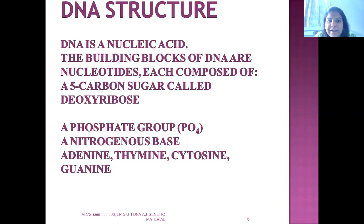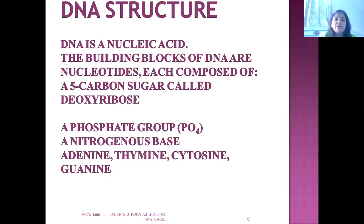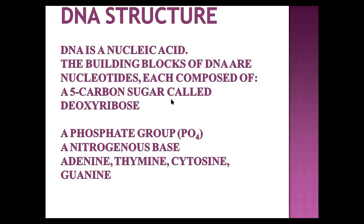DNA is deoxyribose nucleic acid. Naturally, it is one kind of nucleic acid. There are two types of nucleic acid: DNA and RNA. The building blocks of DNA are nucleotides, each composed of a 5-carbon sugar called deoxyribose sugar. You can see that deoxyribose sugar is present in the structure of DNA, whereas ribose sugar is present in the structure of RNA.